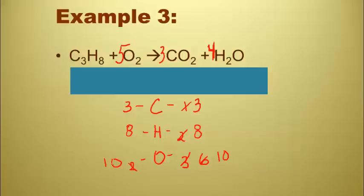Let's double check up at the top here. There are three carbons on the reactant side and three on the product side. There are eight hydrogens on the reactant side and eight on the product side. There are ten oxygen atoms on the product side. And I see six plus four, that's ten oxygens on the reactants. I'm sorry, ten oxygens on the product side.